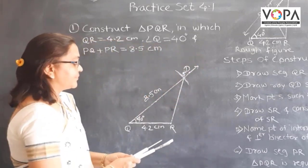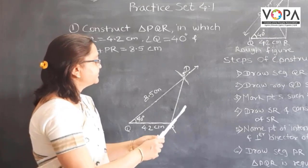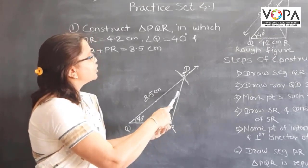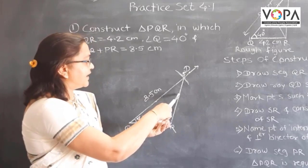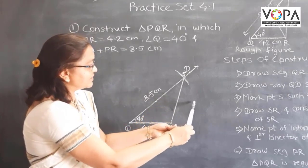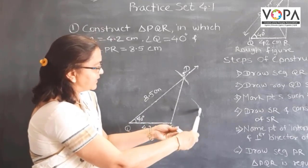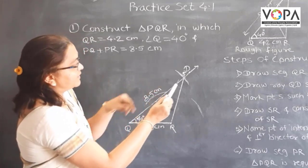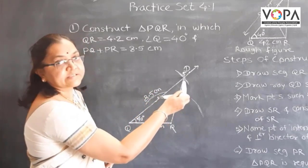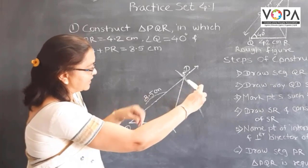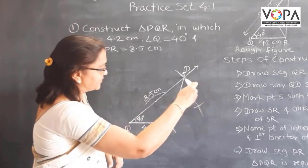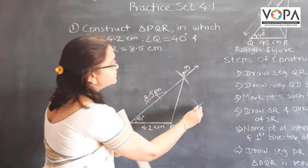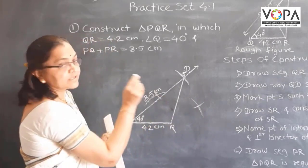For that, again take your compass. Take more than half distance of this segment SR and draw two arcs on both sides of this segment, like this. Then take S as a center. Draw another arc which intersects the previous one. Then join these points of intersection of these two arcs.